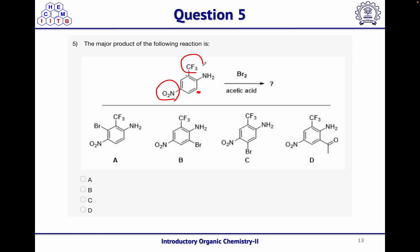For the amino group, the ortho positions are the position adjacent to it and where CF3 is attached; the para position is where nitro is attached. The only position where all three groups cooperatively direct bromination is the one position that is meta to both nitro and CF3 and ortho to amino — so option B is the correct answer. The other options can be ruled out since they require ortho or para for the meta-directing groups, or meta for the ortho-para directing amino group.